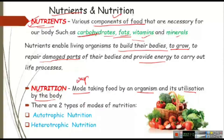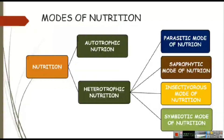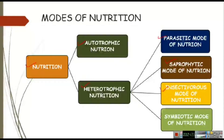Nutrition is of two types: autotrophic nutrition and heterotrophic nutrition. Here is a flow chart that will help you memorize and understand the variety of nutrition. Heterotrophic nutrition can be further divided into four types: parasitic mode of nutrition, saprophytic mode of nutrition, insectivorous mode of nutrition, and symbiotic mode of nutrition. All of these we will learn later in this chapter.